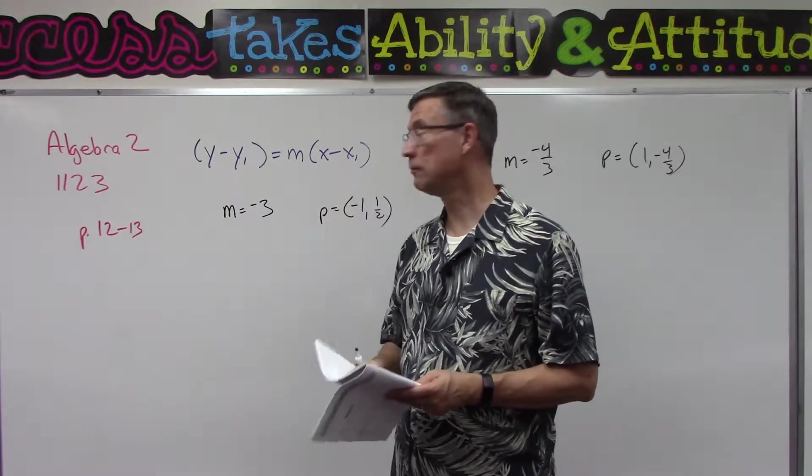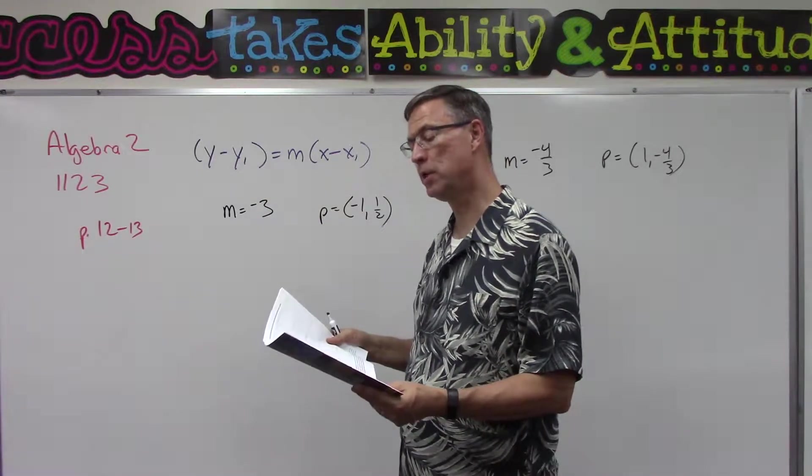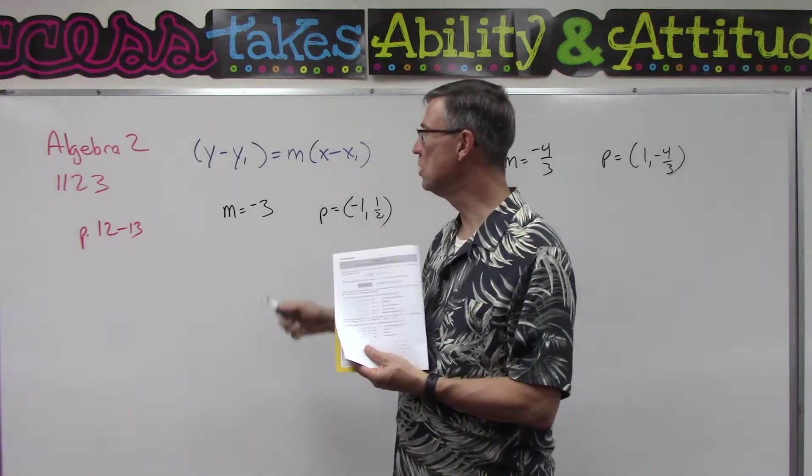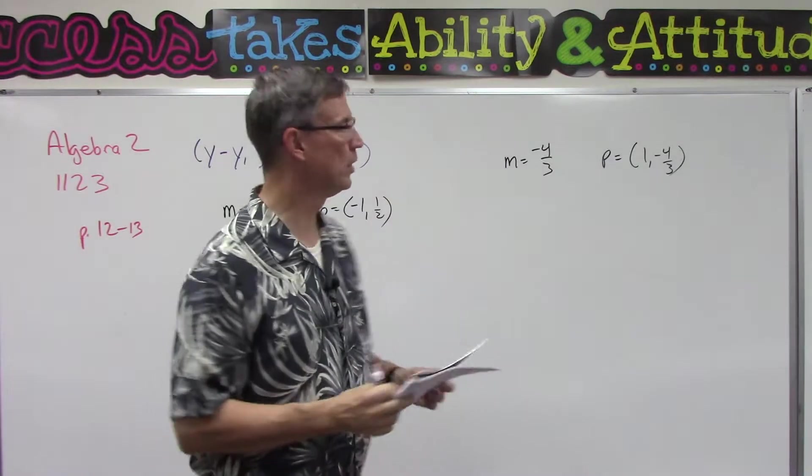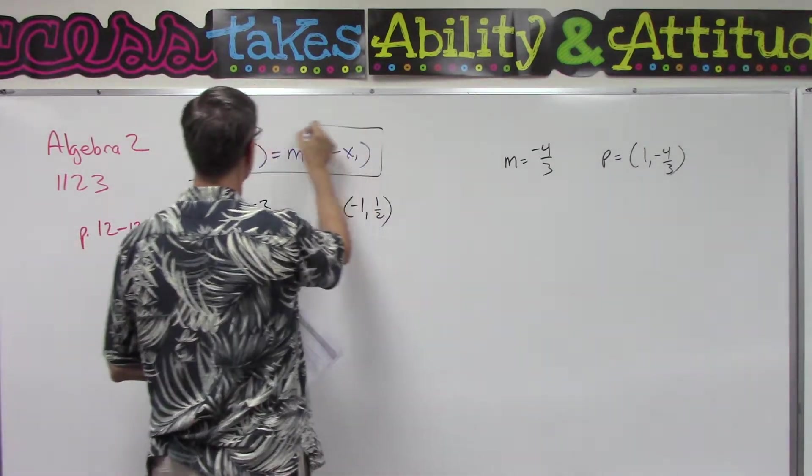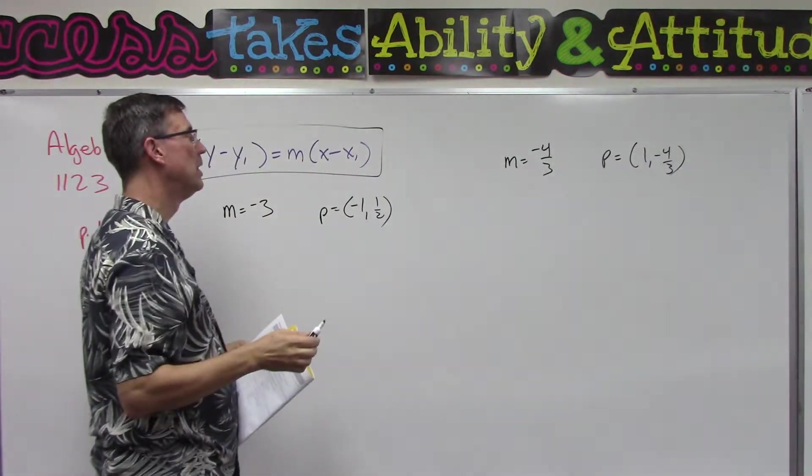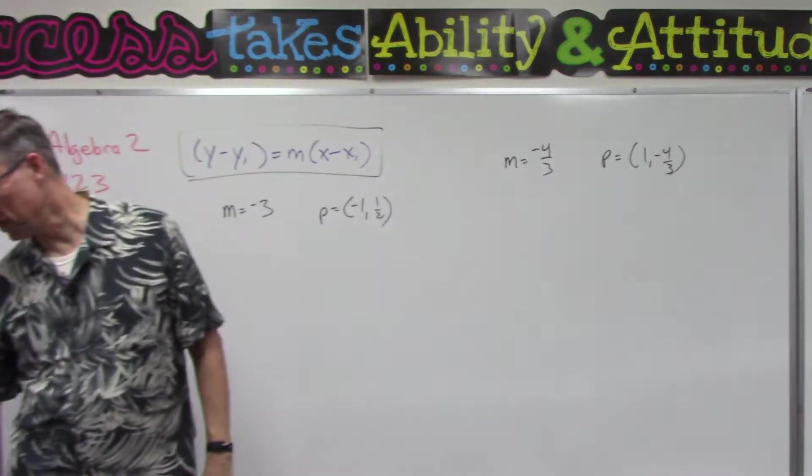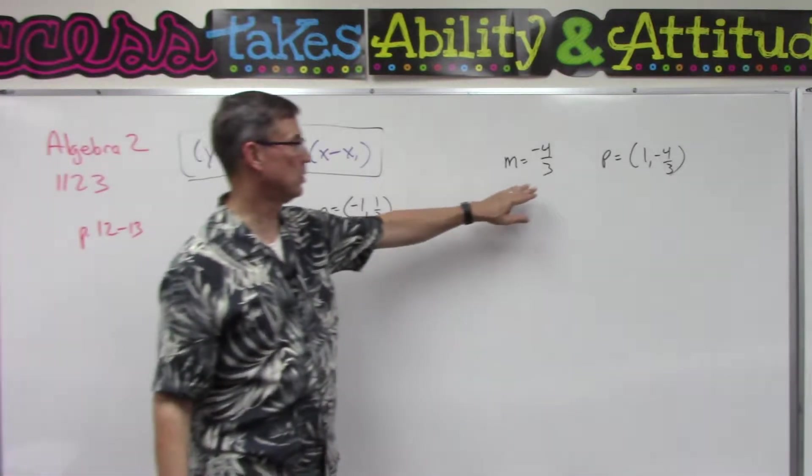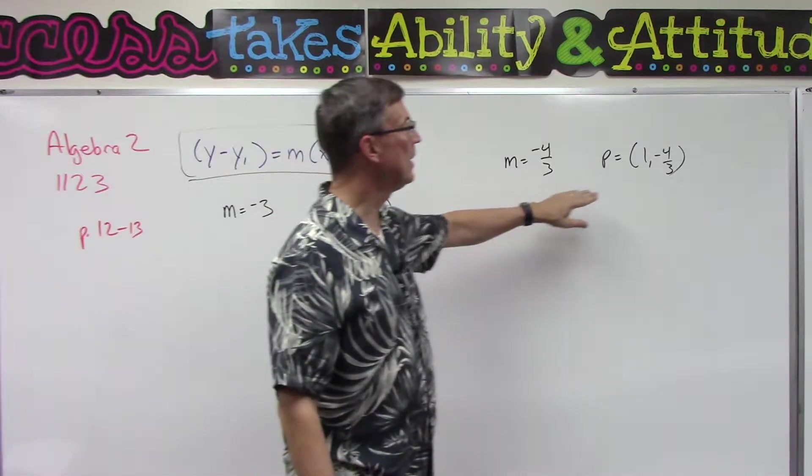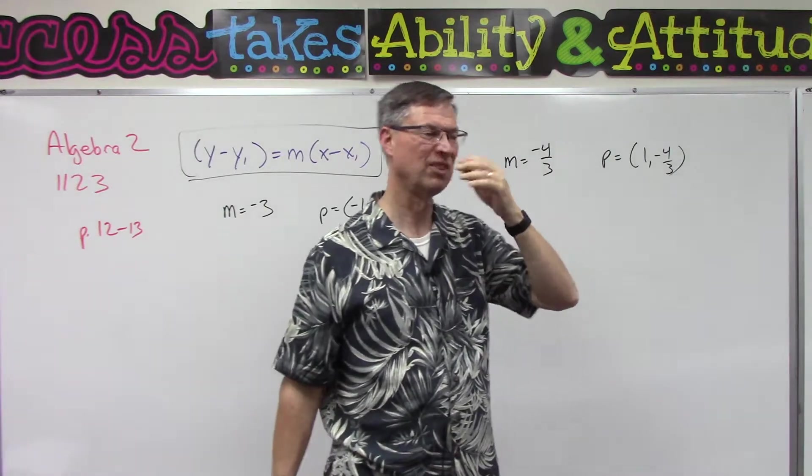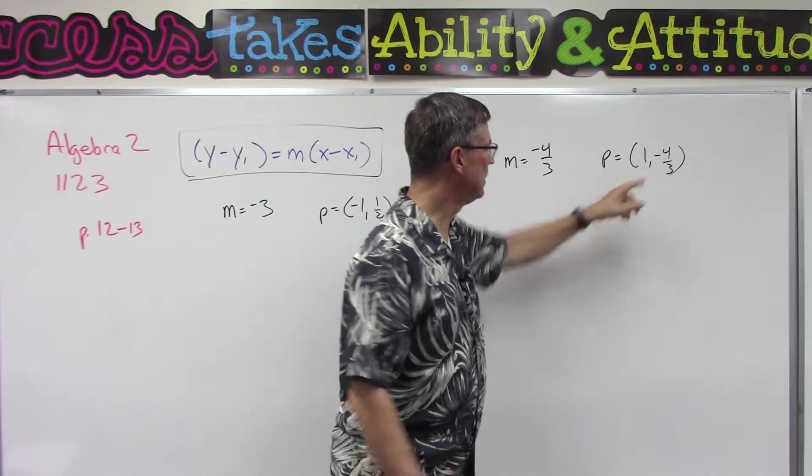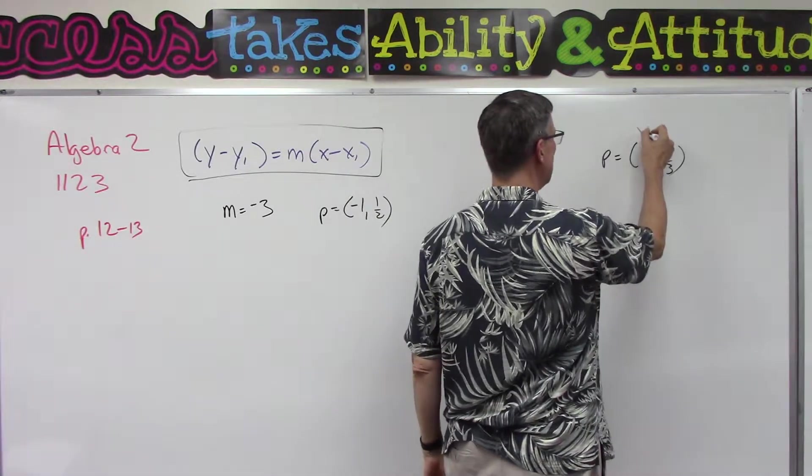Alright, we're on page 12 and 13 now, called the point-slope equation. This is using a new formula that they're going to give us - point-slope. This is a form of the linear equation that is recommended to use if they give us the slope, the m value, and they give us one point. So this point is going to represent the x1, y1.